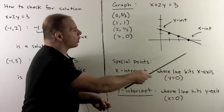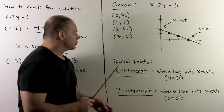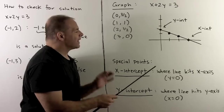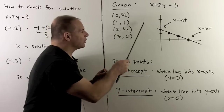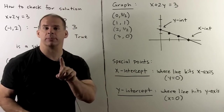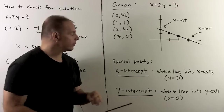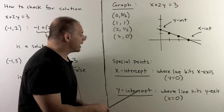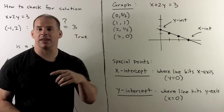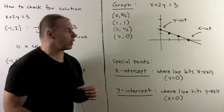On a graph, two special points are the x-intercept — where the line crosses the x-axis, found by setting y equals 0 — and the y-intercept — where the line hits the y-axis, found by setting x equals 0.